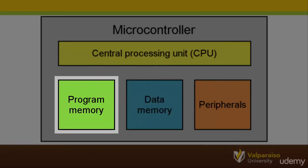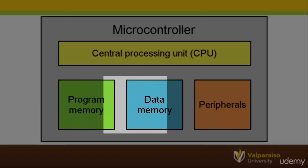The program itself is stored in a block called the program memory. Next, the microcontroller needs to have a place to store information that it collects or processes. For example, it can store or remember if a button is pushed, the status of an output, or perhaps the most recent temperature that it measured. All of this information is stored in a block called data memory.